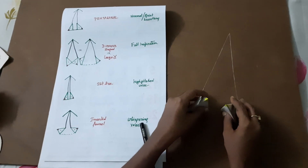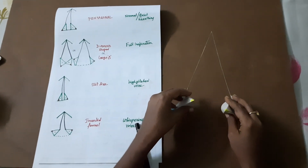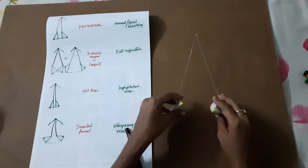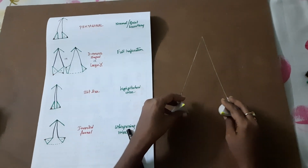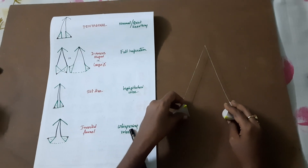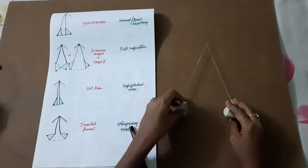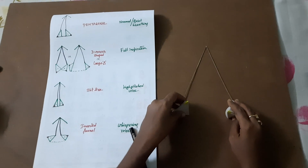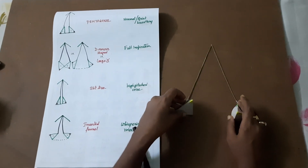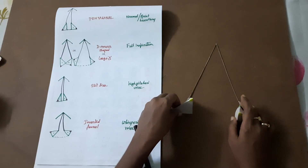When the longitudinal fibers contract, the arytenoid cartilage glides over the shoulder, and the shape of the Rima Glottidis becomes a large triangle — that is the shape during full inspiration. In human beings this large triangular shape occurs during full inspiration.